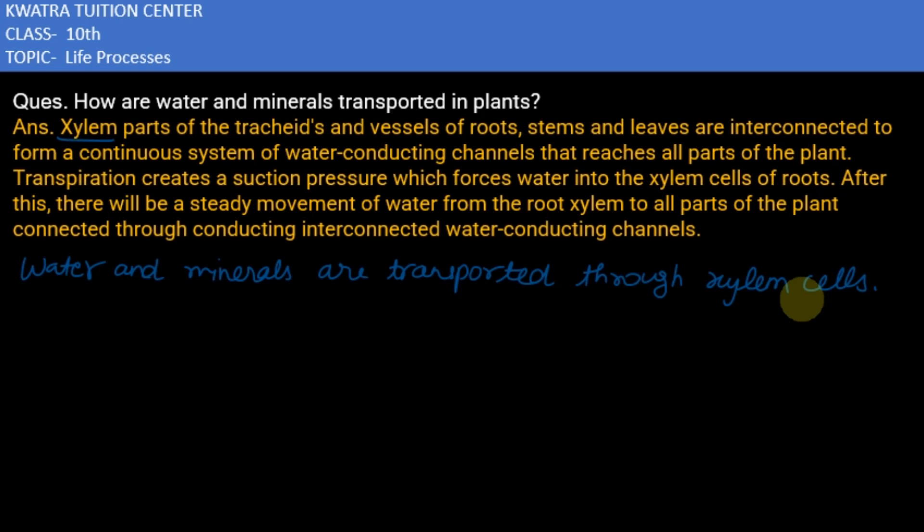Now we have roots, stems and leaves. They make an interconnection to form a conducting channel. This means xylem parts of the tracheids and vessels of roots, stems and leaves are interconnected to form a continuous system of water conducting channels that reaches all parts of the plant.